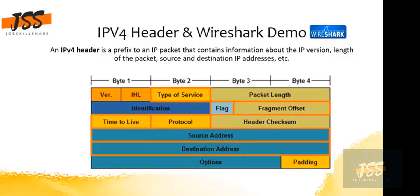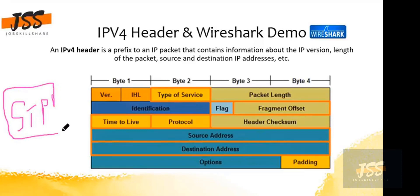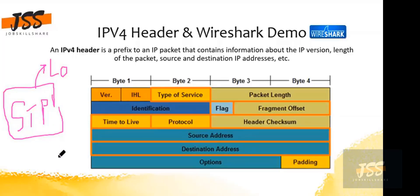If we talk about switches, the concept you'll learn in the next module is called STP — Spanning Tree Protocol. That is also another mechanism for loop avoidance in addition to TTL. TTL is used in the routing environment, while STP is used in the switching environment.